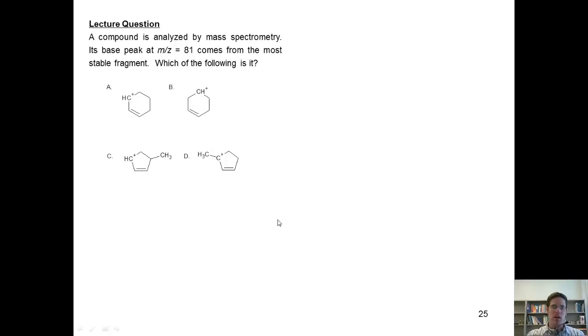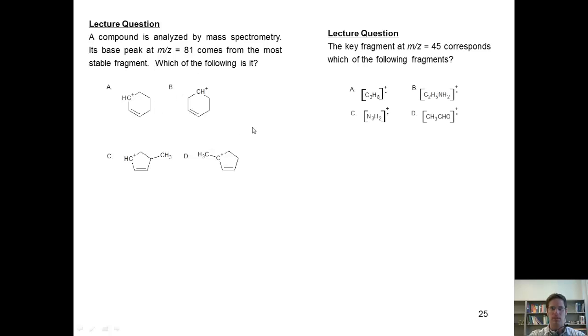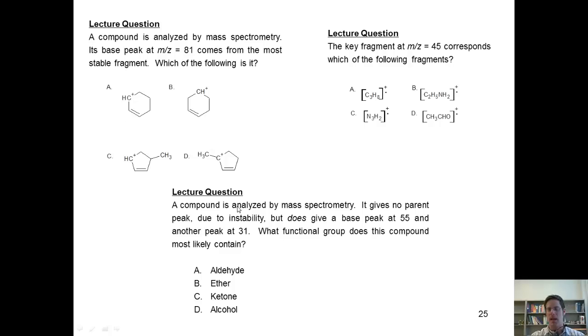Let's go to our next questions. A compound is analyzed by mass spectrometry. Its base peak at m over z equals 81 comes out of the most stable fragment. Which of the following is that fragment? The next one, the key fragment m over z equals 45 corresponds to which of the following fragments? And last question, a compound is analyzed by mass spec. It gives no parent peak due to the instability of that peak, but does give a base peak at 55 and another one at 31. What functional group does this compound most likely contain?